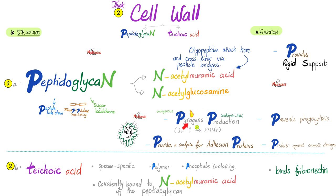Peptidoglycan can also be pyrogenic — meaning it increases release of interleukin-1, which stimulates the hypothalamus to cause fever. It will also help neutrophils proliferate. That's why you get fever and leukocytosis.